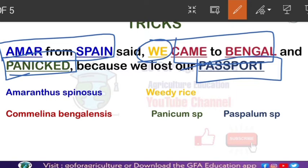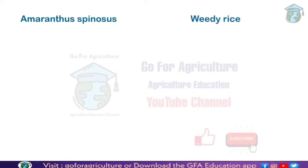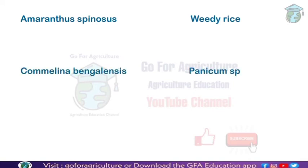These are the five weeds of rice you have learned today. Let's go through them: 'Amar from Spain said we' — Amaranthus spinosus and weedy rice. 'Came to Bengal' — Commelina bengalensis. 'Panicked' — Panicum species. 'Because we lost our passport' — Paspalum species. These are the five weeds of rice.